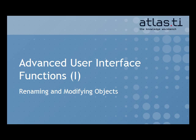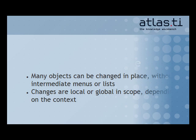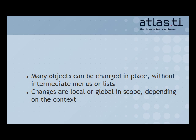In this tutorial, we'll take a look at how to make direct changes to your objects in a number of program windows in Atlas TI. If you'd like to change an object's name, this can often be done directly in a variety of locations. These changes can also have a global or a local impact, depending on their context.